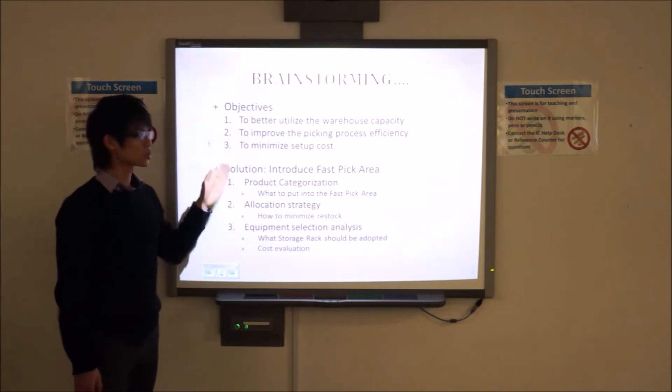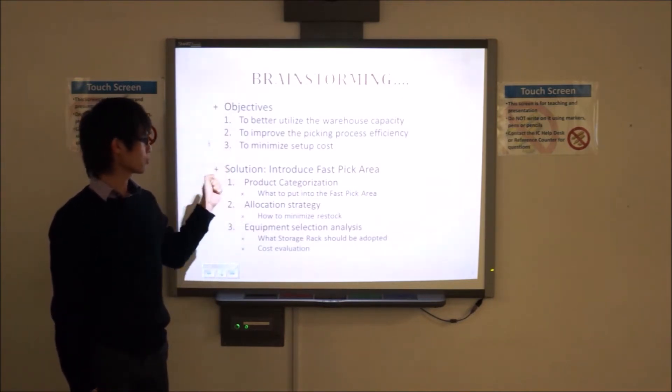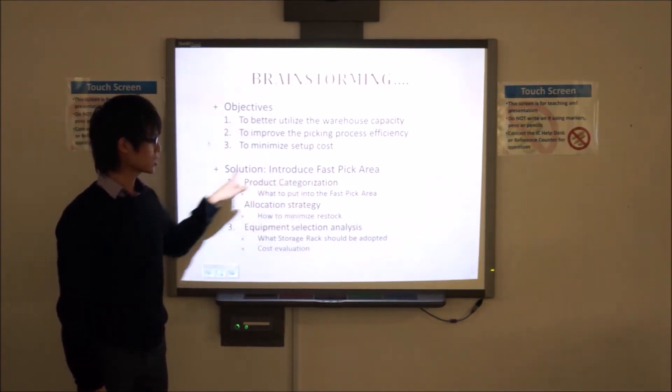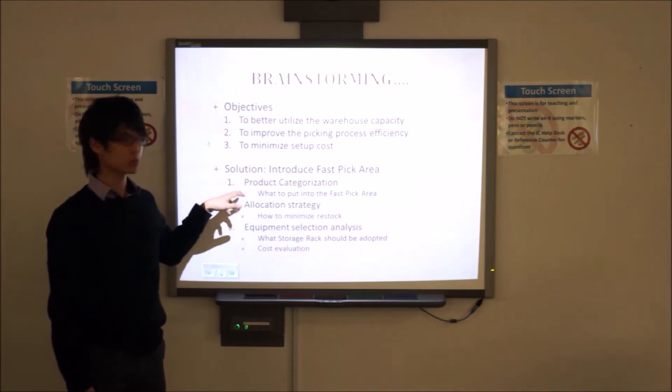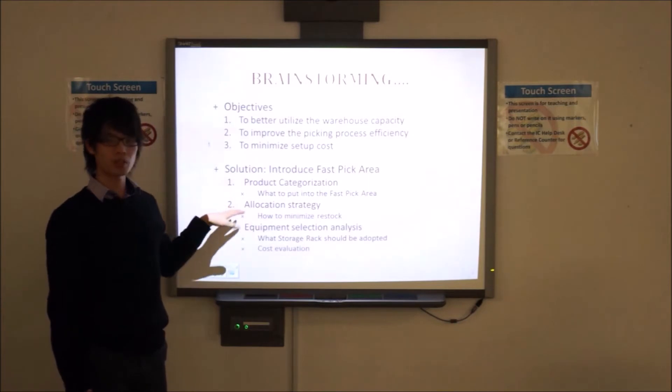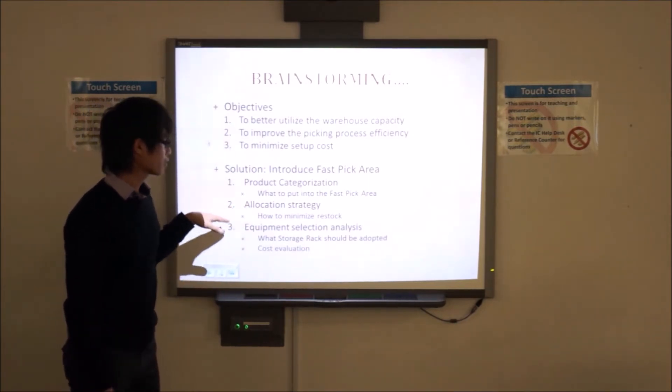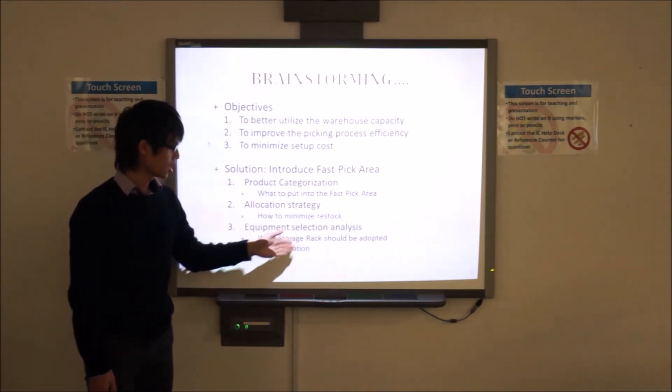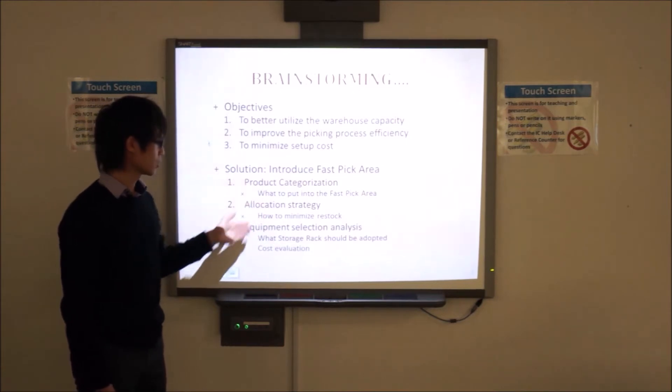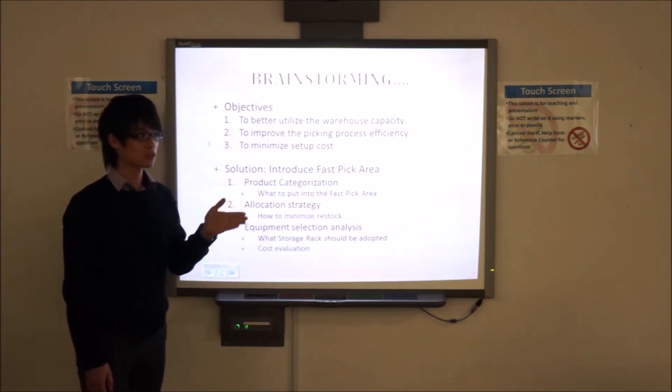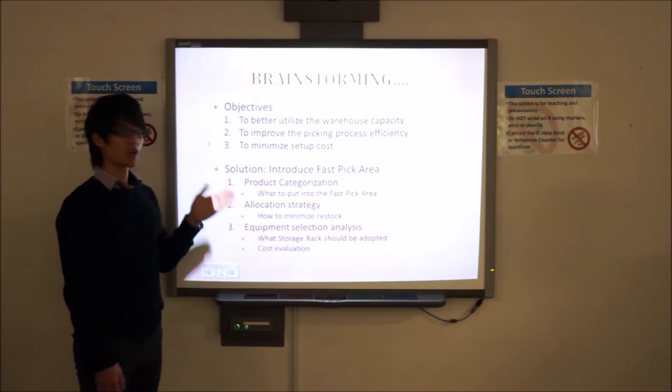Our solution is to introduce a fast packing area, which comes with below enhancements: product categorization, the design of what to put into the fast packing area, and then allocation strategies that will minimize the stock per cubic feet. And then finally, it comes to an equipment selection to justify what racks we'd like to use for the fast packing area, and finally, it comes to a cost evaluation that will justify our analysis. I'll introduce Matt to you for ABC analysis.